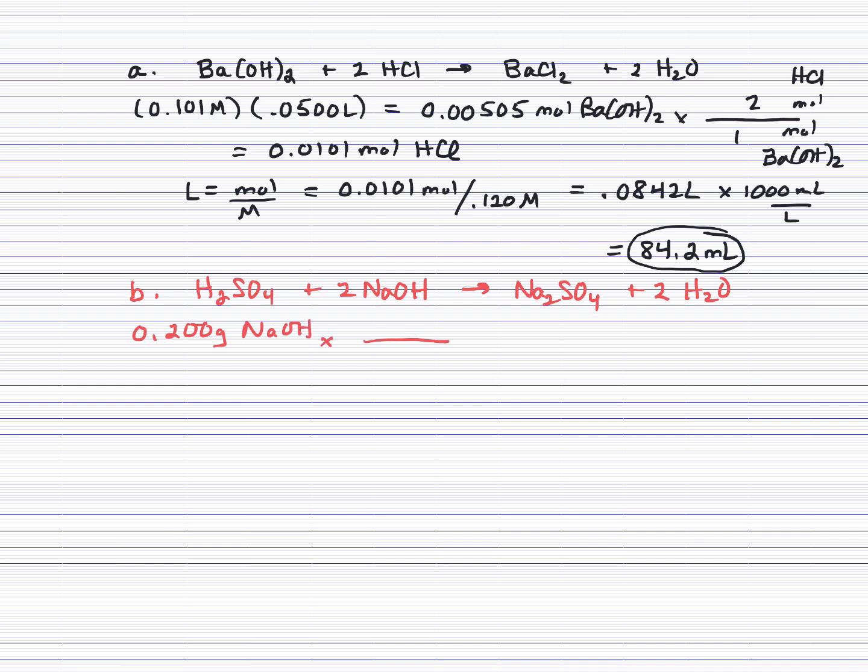So we can go ahead and change grams to moles. And then we can do a mole ratio. Okay, so grams of NaOH to moles of NaOH. And then we'll change moles of what we're looking for, which is the H₂SO₄. The ratio is 1 to 2. And NaOH has a molar mass of 40. So this is going to be 0.00250 moles of our H₂SO₄.